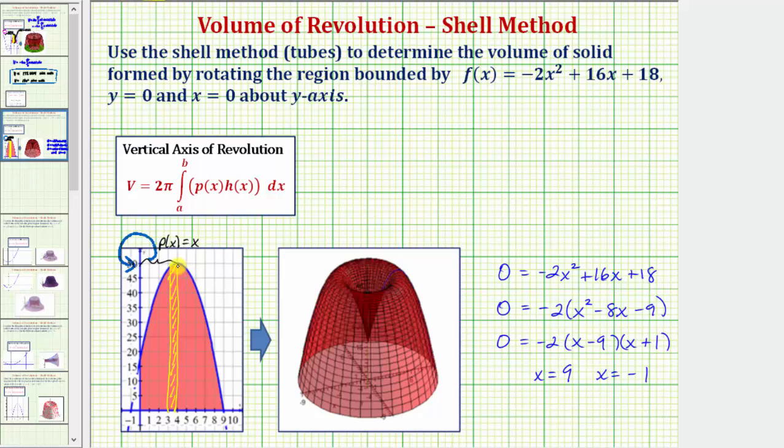The height of the rectangle would be this distance here. Notice how this height is given by the function value. And therefore the height function h of x is given by negative 2x squared plus 16x plus 18. This is all the information we need in order to find the volume of this solid.